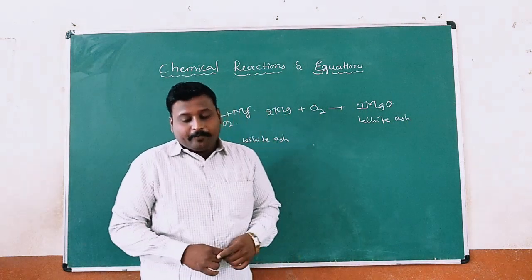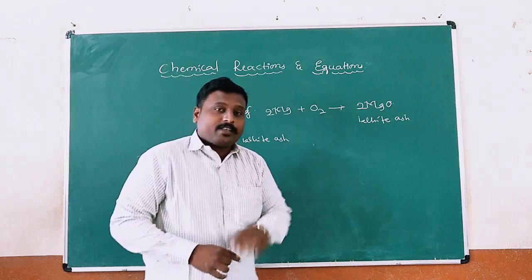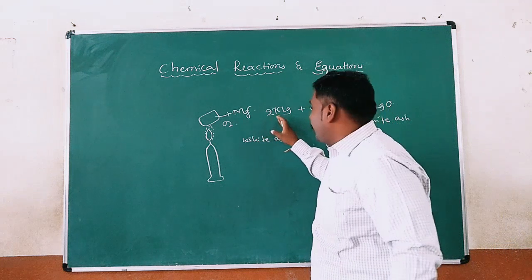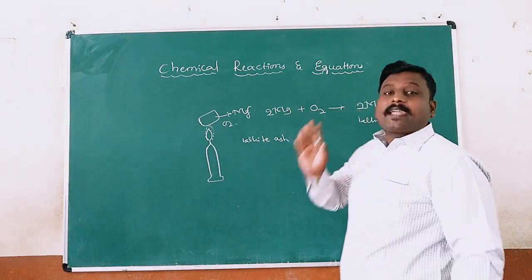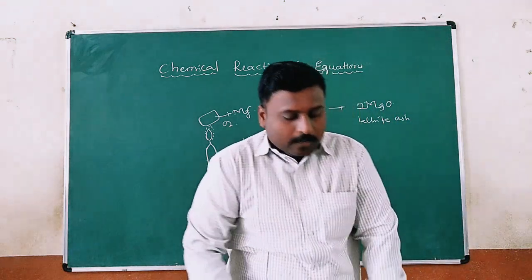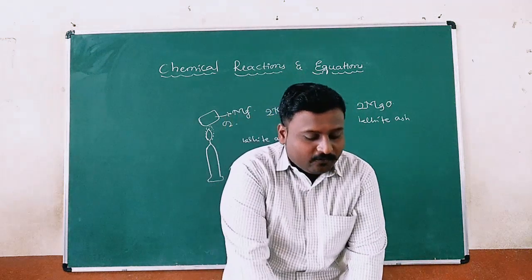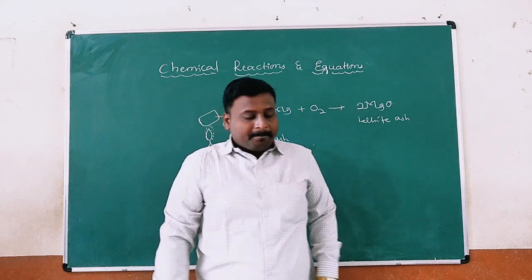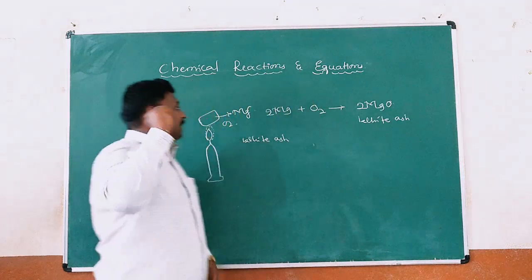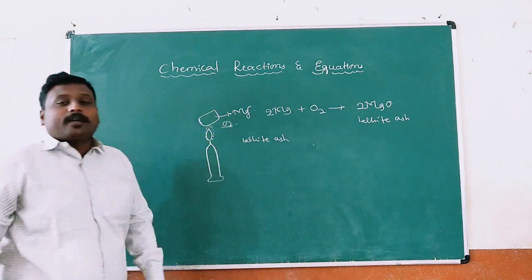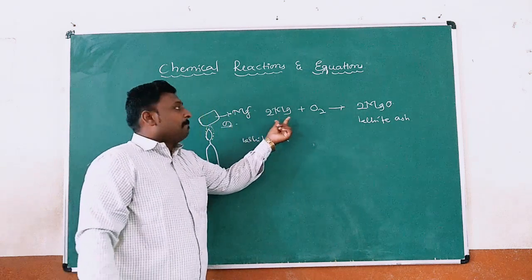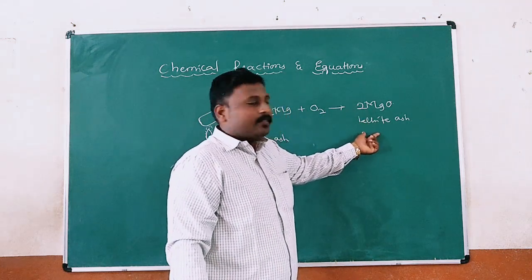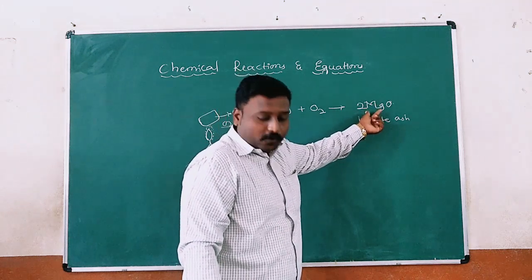It is formed due to the reaction between magnesium and oxygen present in the air. First activity: remember, when magnesium ribbon reacts with oxygen, it is converted to magnesium oxide. Magnesium ribbon burns with a dazzling white flame and changes into white powder. This powder is magnesium oxide, formed due to the reaction between magnesium and oxygen present in the air. Oxygen is responsible for the process of combustion. The product formed here is magnesium oxide.